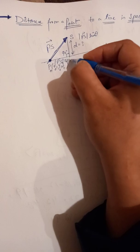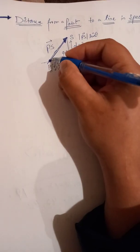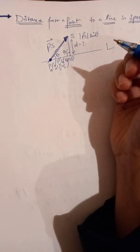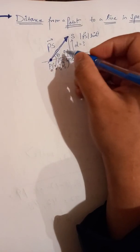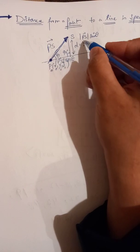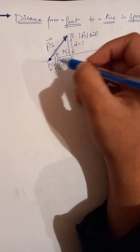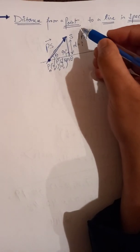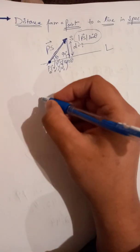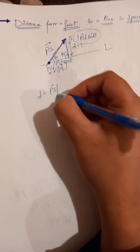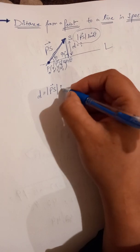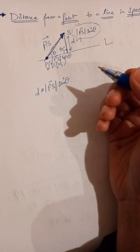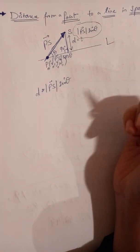The horizontal component is the magnitude of PS times cos θ, where θ is the angle between PS and the line. We are concerned with the perpendicular height, so the distance d equals the magnitude of PS times sin θ.